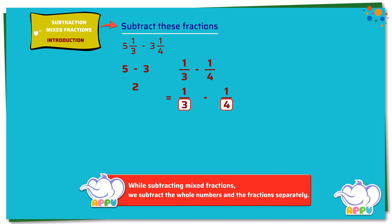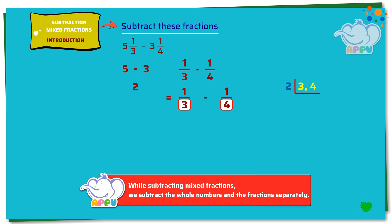Let's make the denominator the same by finding the LCM of the denominators 3 and 4. To find the LCM of 3 and 4 using the division method, we write the denominators separated by a comma. Then we divide by the least prime number that divides any of these two numbers — here we start with 2. 3 is not divisible by 2, so we write 3 as it is. 4 is divisible by 2; we get 2.